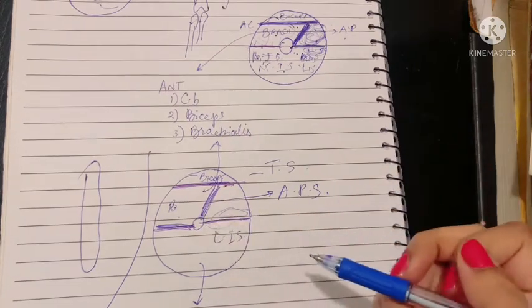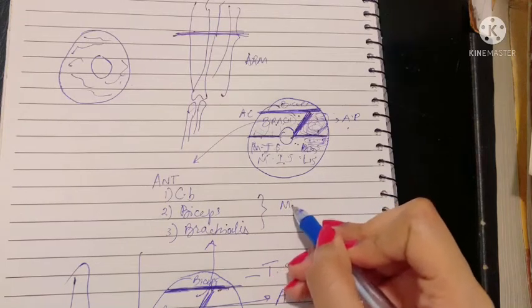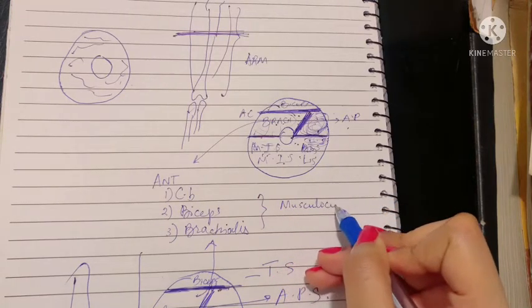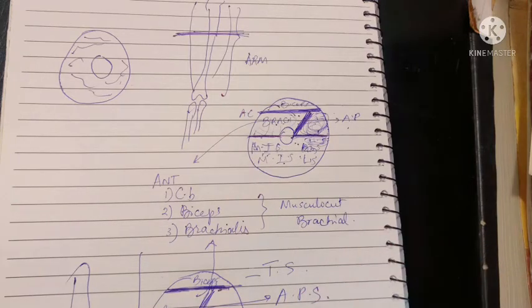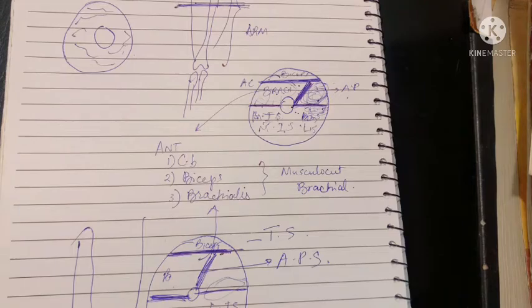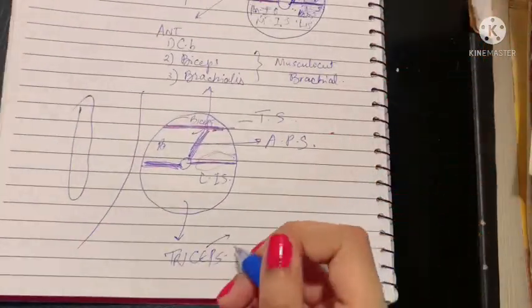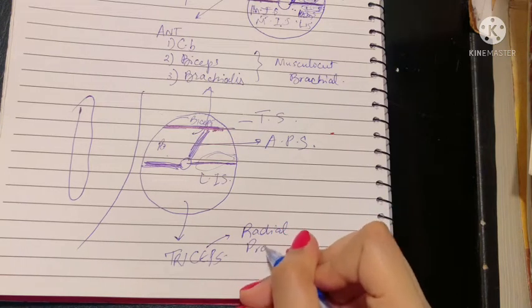Other things—the anterior compartment consists of certain nerves like the musculocutaneous nerve and the brachial artery. The posterior compartment also consists of certain nerves. Of course, these are the radial nerve, which is most important, and the profunda brachial artery.